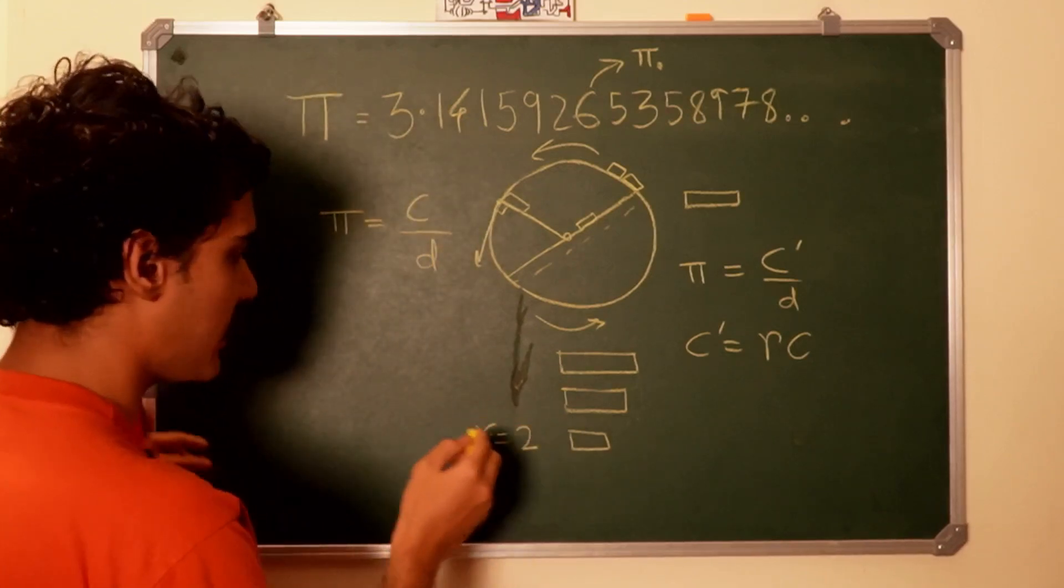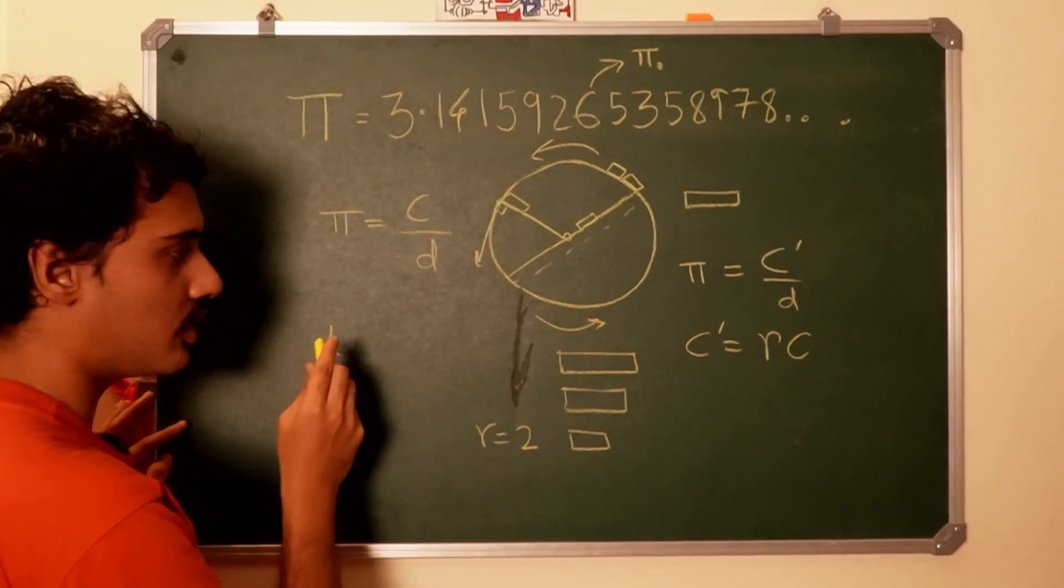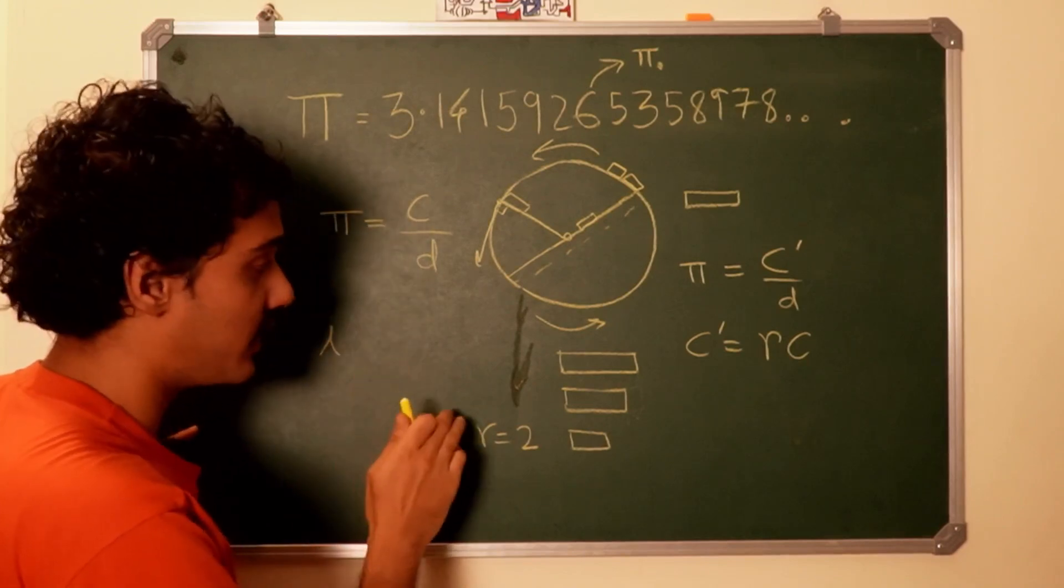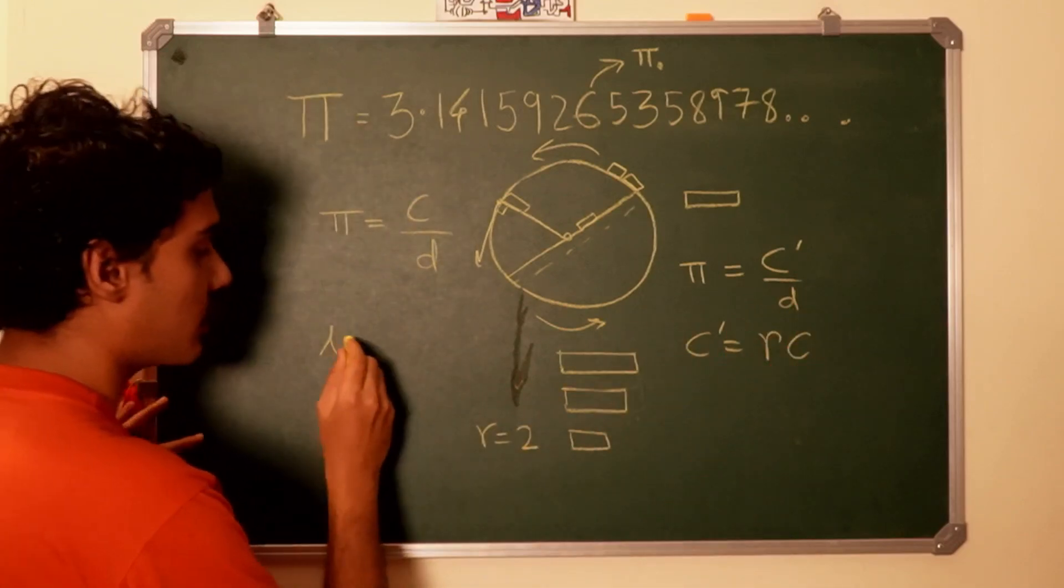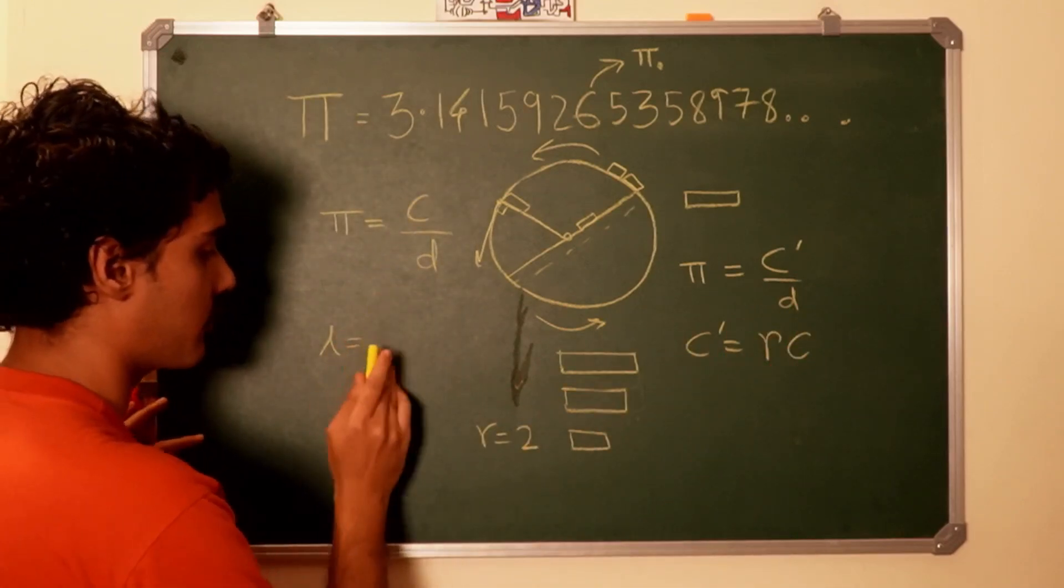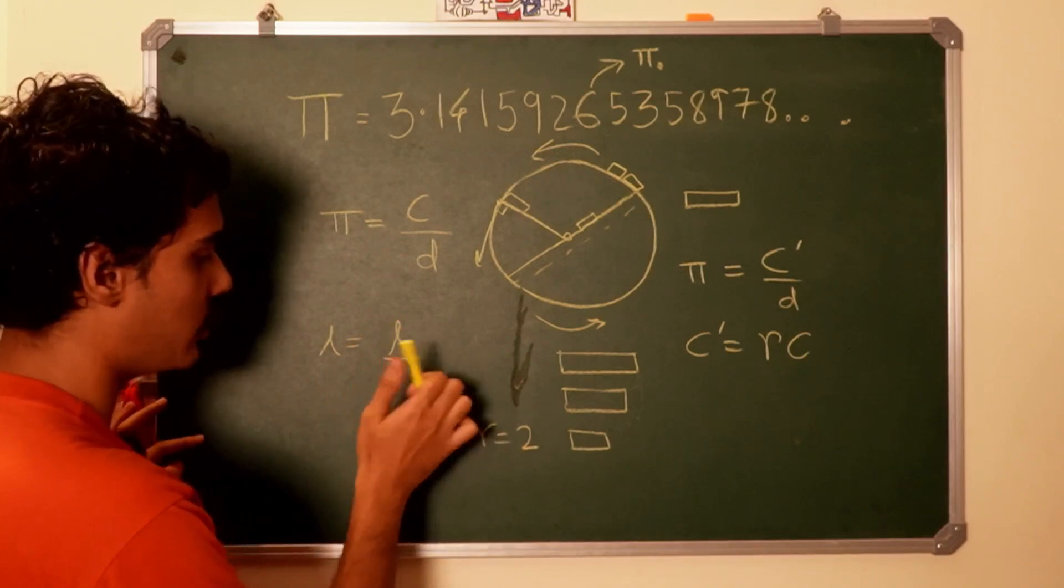So the formula is that the length in your frame where you are not moving and then of the meter stick, and then you send the meter stick flying, it would become L by gamma.